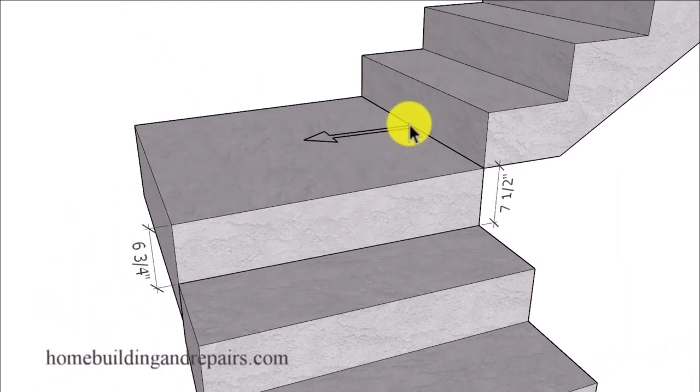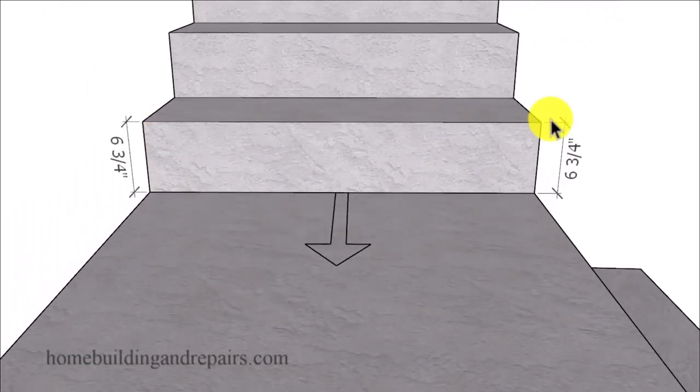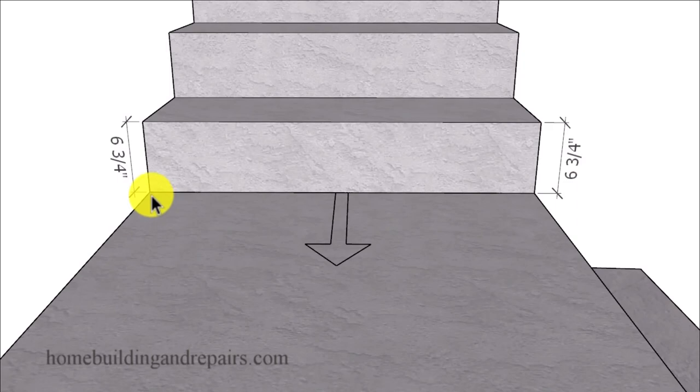So in this example here, the water is going to roll off of the side of the stairway. And even though we have a variation in the riser height on this side, we're not going to have it on this side. This side is going to be level.